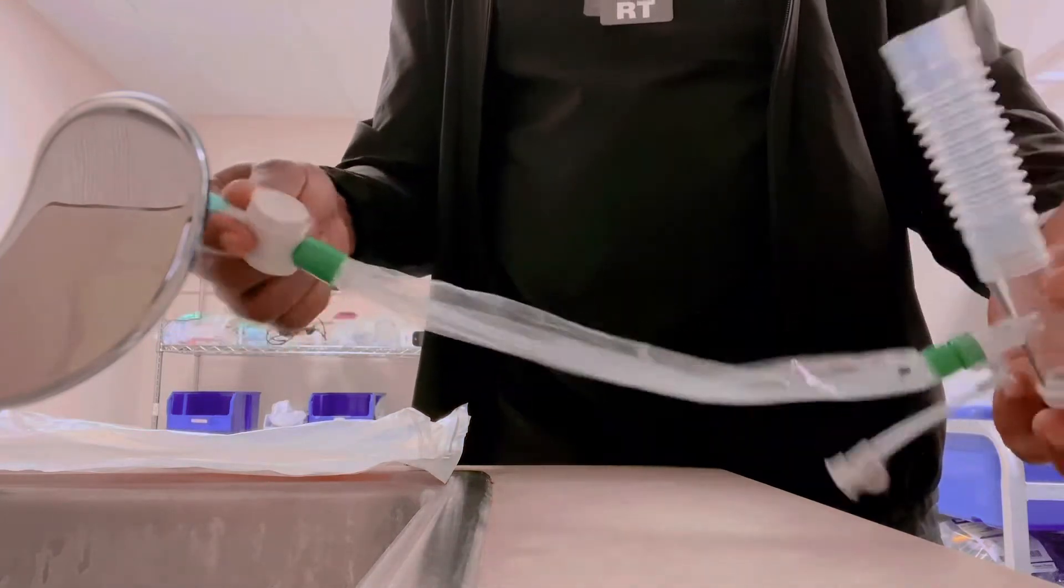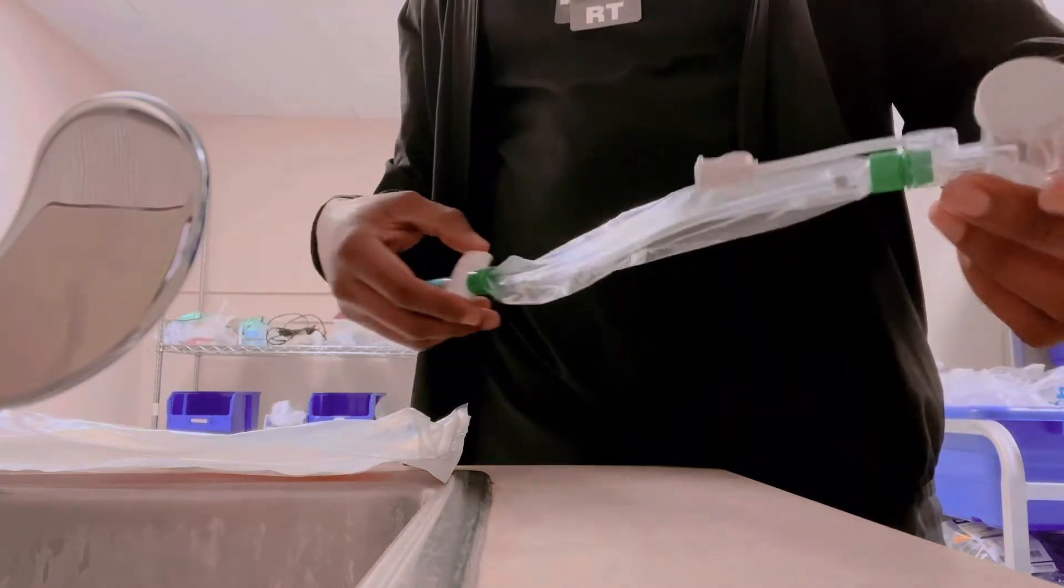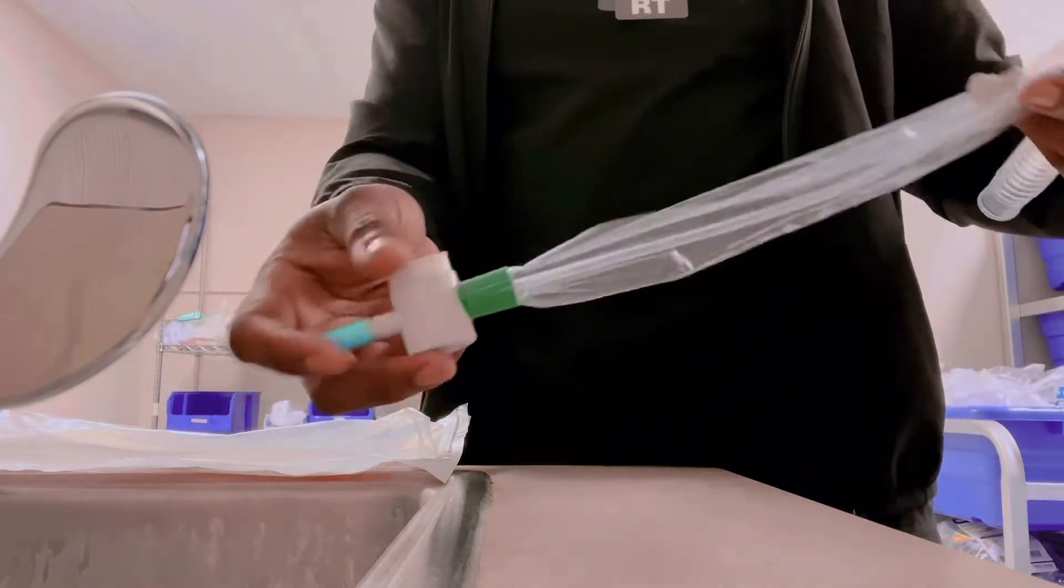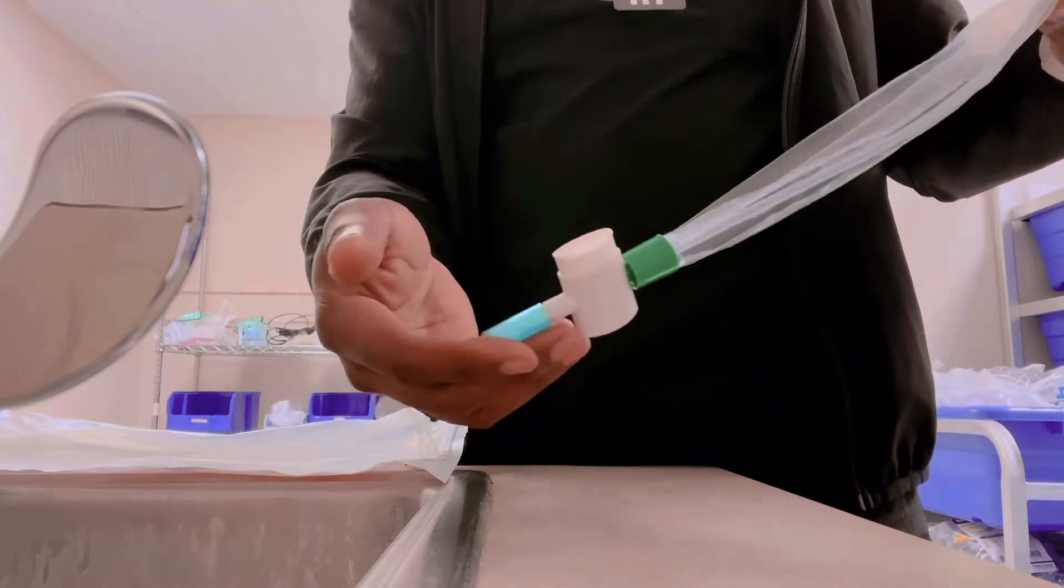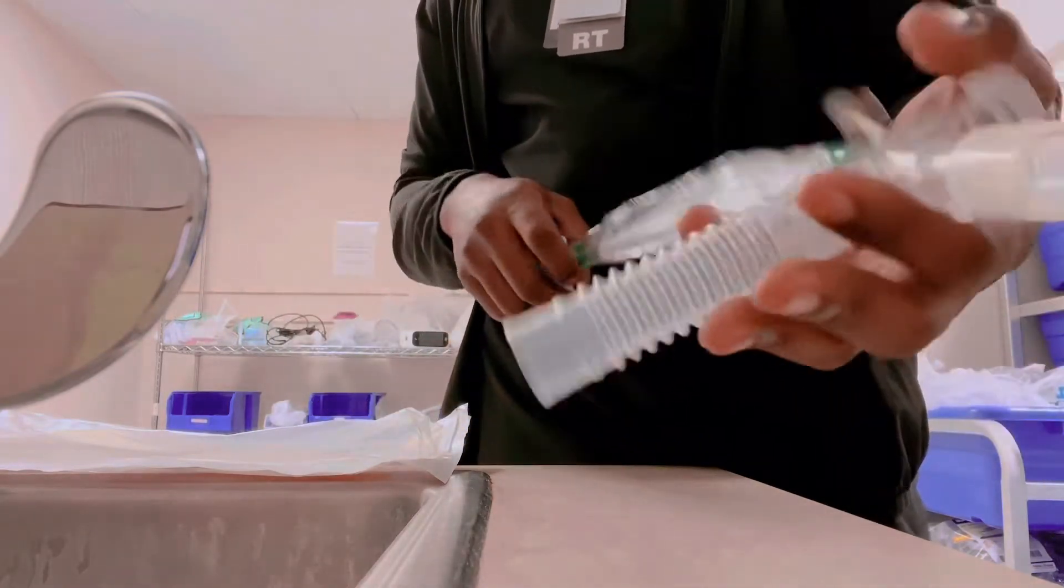The other closed bollards we have will probably be about double in length because they go into the endotracheal tube. This is the tracheostomy bollard.